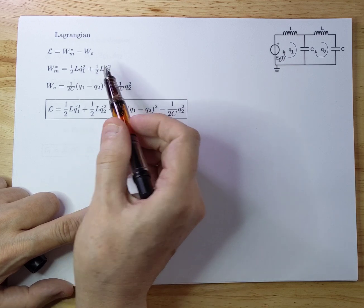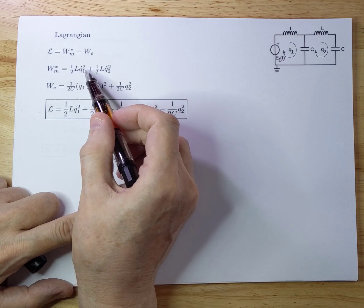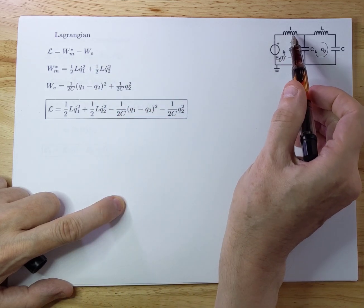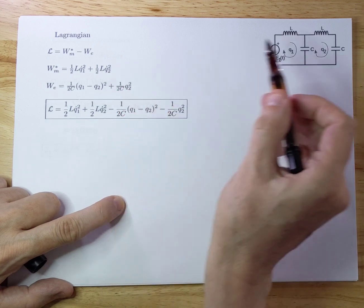So it's half LQ1 dot squared for the energy in this one. And then a half LQ dot 2 squared for that one.